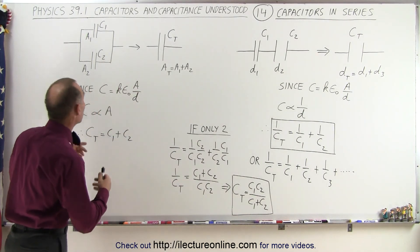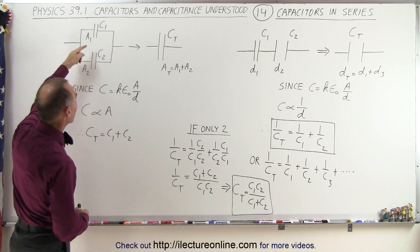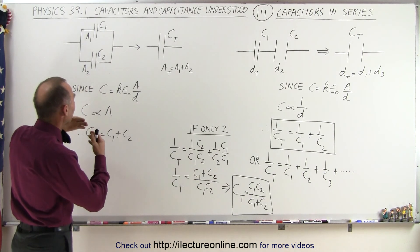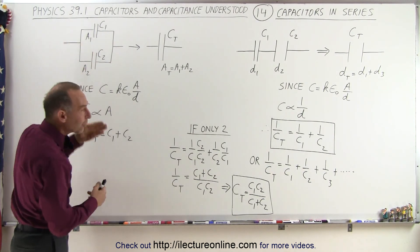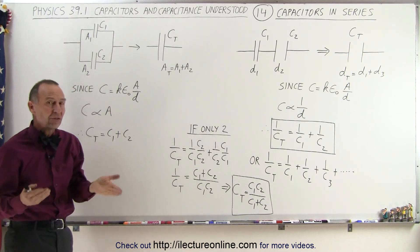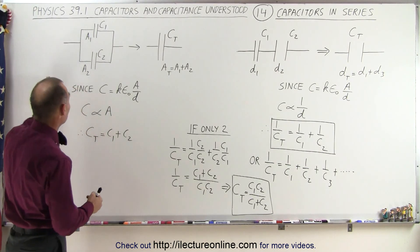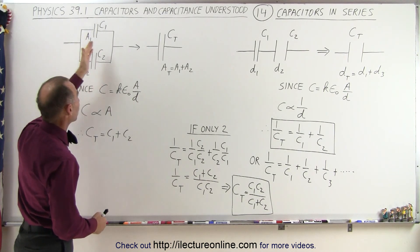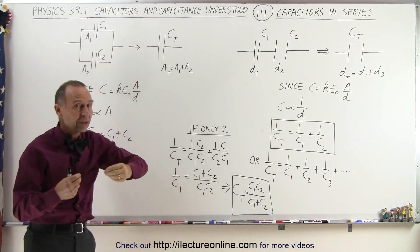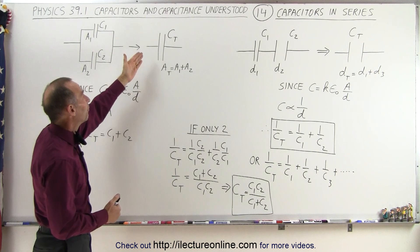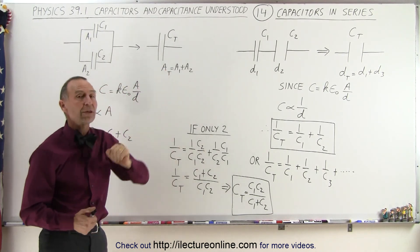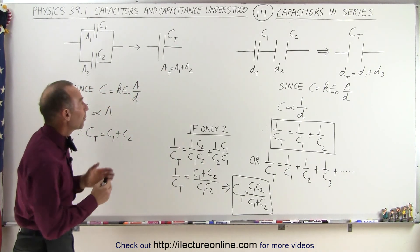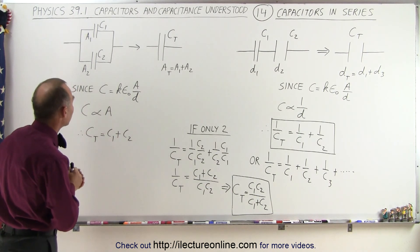In the previous video, we added capacitors when they're hooked up in parallel. We realized that it's as if we're adding the areas of the capacitors together, because charges will either go to this area or to this area, so that the total or equivalent capacitance is simply a function of adding the areas of the capacitors together. That's the concept when we're adding capacitors in parallel.